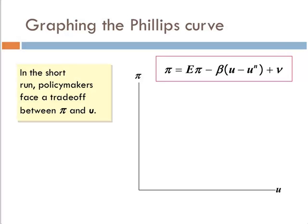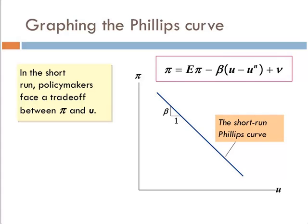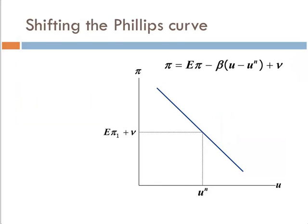Graphing the Phillips curve. In the short run, policymakers face a trade-off between inflation and unemployment. In the short run, where that slope is, of course, this beta, and actually the way we have written it, they should write that as negative beta. Expected inflation plus nu is this point where we're at the natural rate of unemployment. This is in essence a kind of equilibrium. So the economy is at this point, the economy is at the natural rate of unemployment, and inflation is actually what we expect inflation to be.